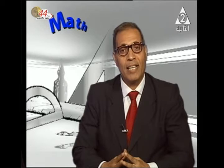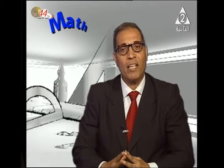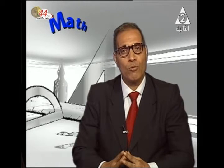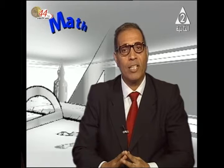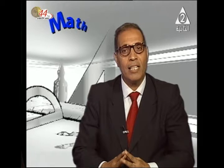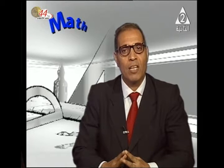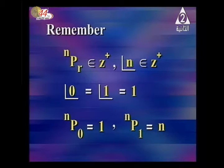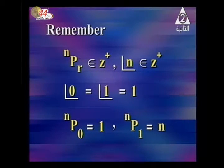The permutation of n with respect to r: nPr = n × (n−1) × (n−2) × (n−3) × … × 1. Also, n! = n × (n−1)!; (n−1)! = (n−1) × (n−2)!. For example, 8! = 8 × 7!; 7! = 7 × 6!; 6! = 6 × 5!. Very important: nPr belongs to positive integers, 0! = 1, 1! = 1, nP0 = 1, nP1 = n.